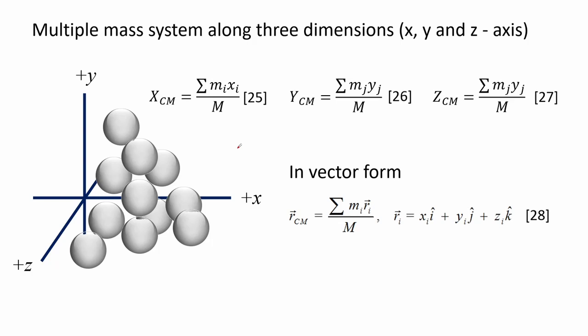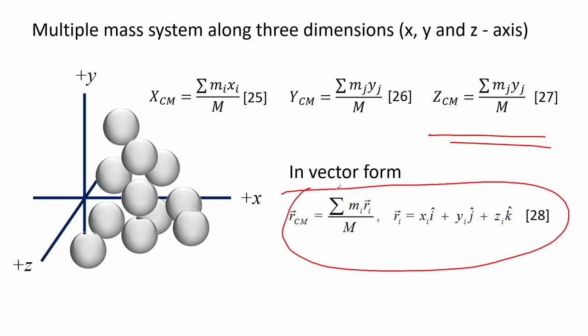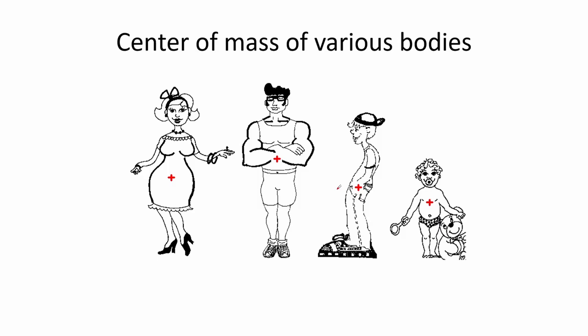For three-dimensional space, we add zcm as shown in equation 27. We can write the center of mass in vector form by combining x, y, and z center-of-mass values into equation 28. As mentioned, the shape and distribution of masses alters the center of mass position, as illustrated by figures showing different people with the center of mass indicated by a red cross.